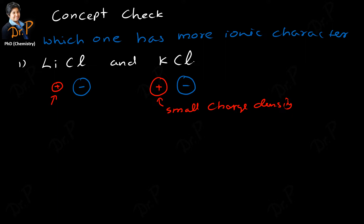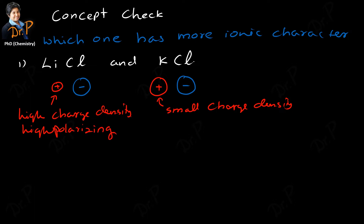The smaller cation has the higher charge density. Higher charge density means that cation has high polarizing power. High polarizing power means it tends to pull the electron cloud of the anion more strongly. So lithium cation will strongly pull the electron cloud of the anion compared to potassium ion.